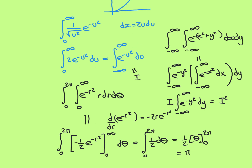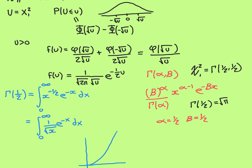Since we've shown this Gaussian integral equals gamma of a half, we now know gamma of a half is the square root of pi. Coming back to what we were actually discussing, all of that was a sidetrack to show that. The PDF we have is the same as the PDF of the gamma distribution with parameters one half, one half. We've verified each piece matches, and since gamma of a half equals the square root of pi, we do indeed get 1 over the square root of pi. So the chi-squared distribution with one degree of freedom is the same as the gamma distribution with parameters one half, one half.